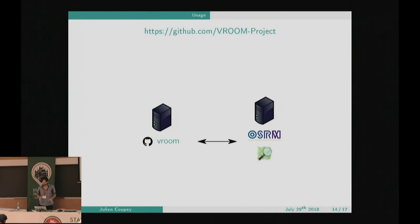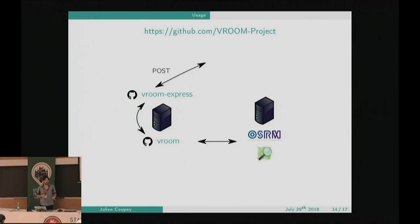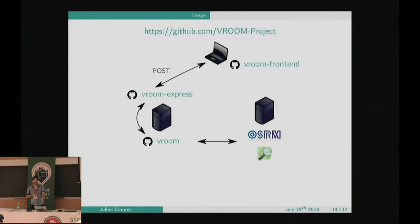If you want to use the project, you first need an OSRM server running on top of OpenStreetMap data — your own, a remote service, or whatever. Then clone the backend solver from the Vroom project namespace on GitHub, compile it, and you can use Vroom as a command line tool. If that's not convenient, you can use it on a server with remote calls via Vroom Express, a small Express.js server that receives POST requests containing the problem data, handles the solving, and gives back the answer. Or, even simpler, you can use the frontend, which is what I showed in the demo.